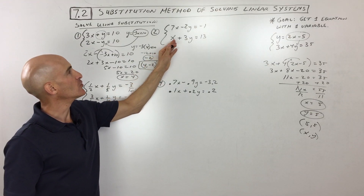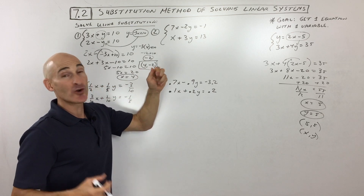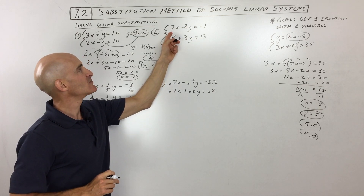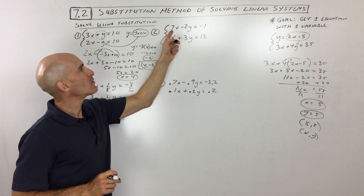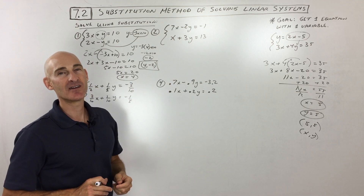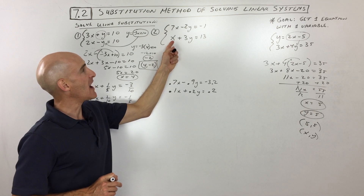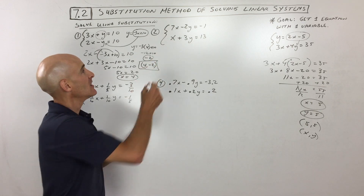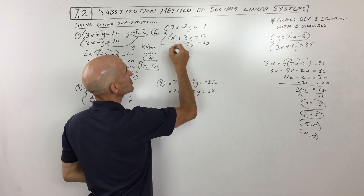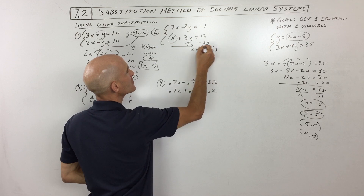Let's go to number 2. See if you can do this problem on your own. What do you think — would it be easier to solve for this x, this y, this x, or this y? Well, probably this one because there's only one x and it's positive x. So I'm going to get this by itself by subtracting 3y from both sides of the equation, and that's going to give us x equals negative 3y plus 13.